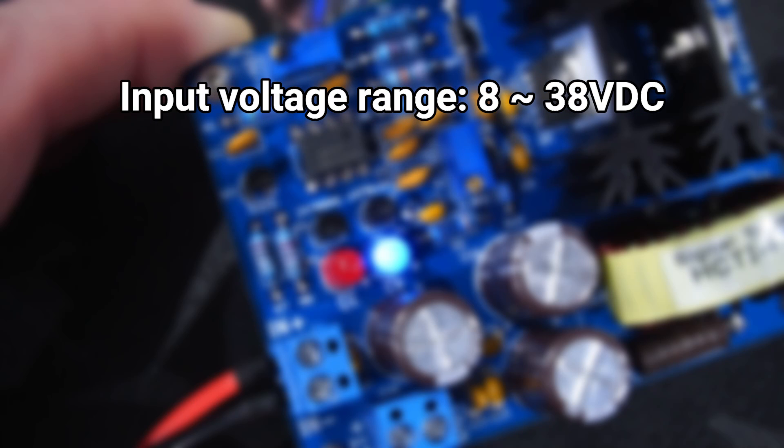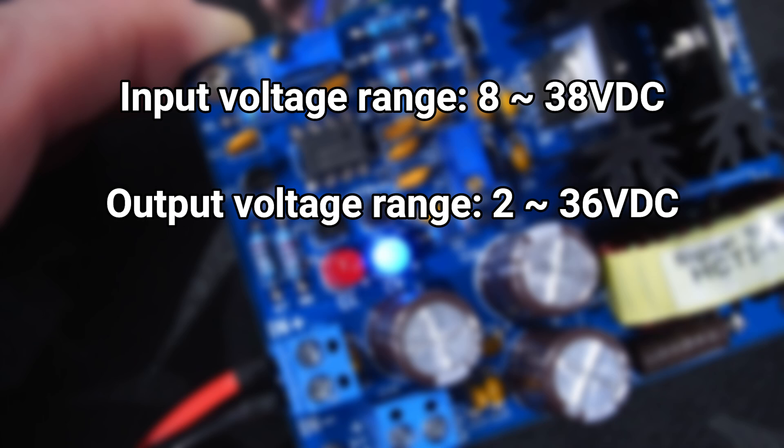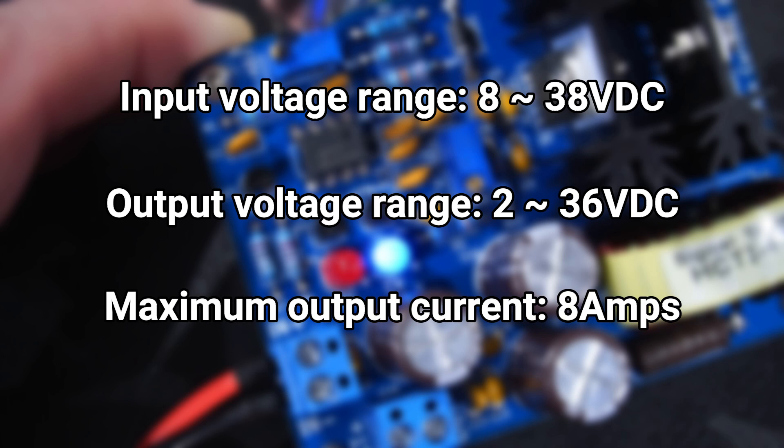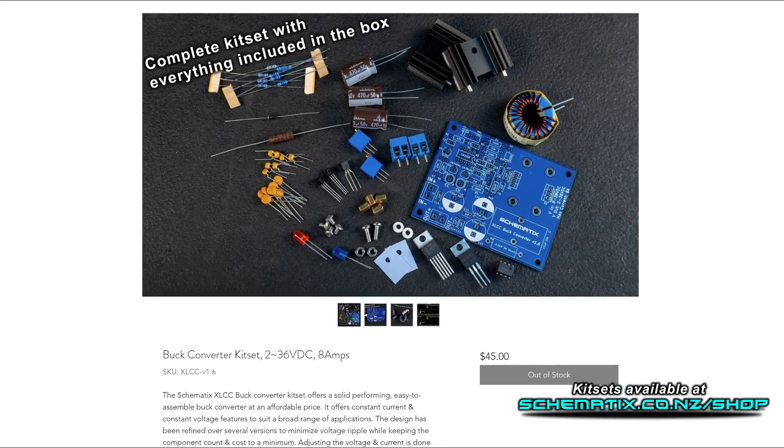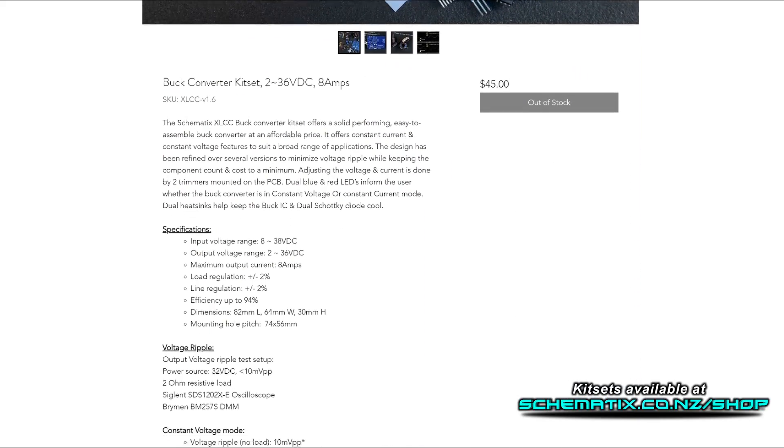The buck converter has a wide input voltage range of 8 to 38 volts DC and an output voltage range of 2 to 36 volts DC and can output up to 8 amps of current. Check out the product page for more detailed specs if you're interested.